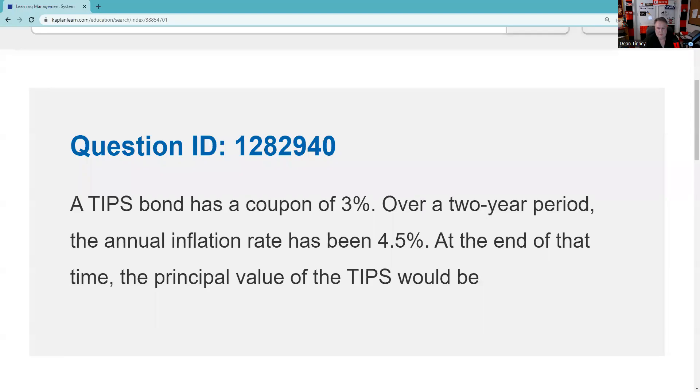This is Kaplan QID 1282940. Again, all you need to do is send me the QID. You don't have to cut and paste or do any of that stuff. TIPS, I can't imagine any draw in which you're not going to get asked about a TIPS, Treasury Inflation Protected Security.